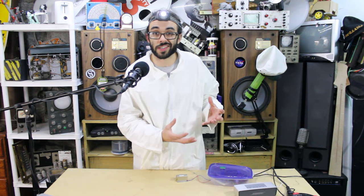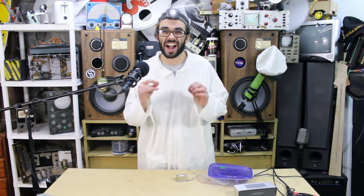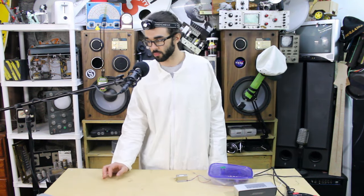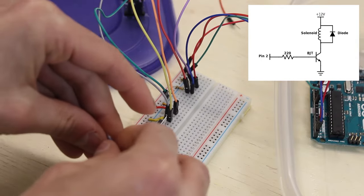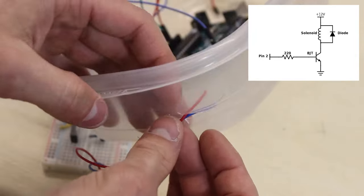I'm using a beefy transistor to control the solenoid. If you don't have a transistor that can handle the current of the solenoid, you can just use a relay. Use a 220 ohm resistor between digital pin 2 and the base of your transistor.